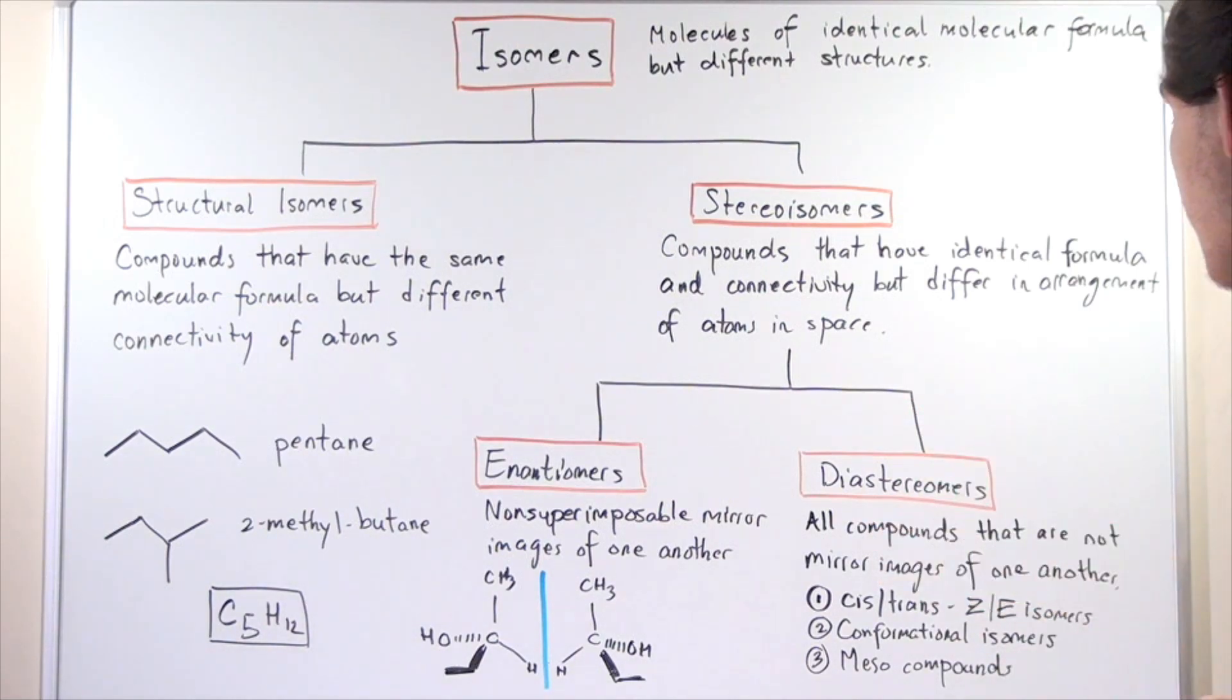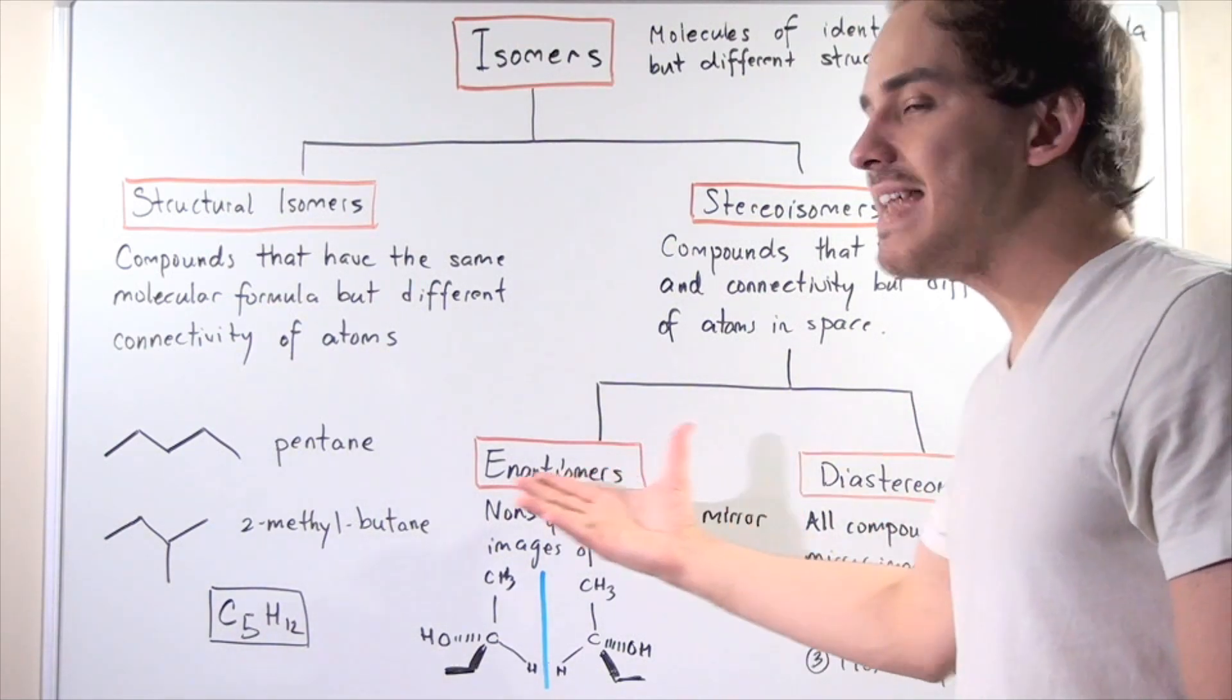Diastereomers are all compounds other than enantiomers, so all compounds that are not mirror images of one another. A few examples exist. Cis-trans or ZE isomers are examples of diastereomers.